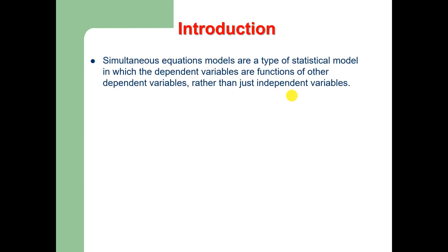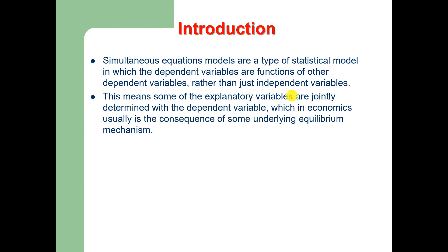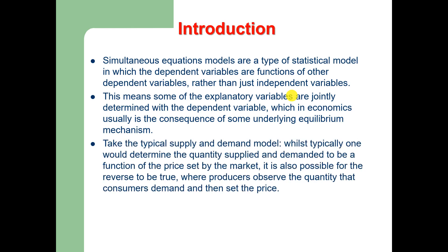Simultaneous equation models are a type of statistical model in which the dependent variables are not only a function of the exogenous variables but also of other dependent variables. This means that some of the explanatory variables are jointly determined with the dependent variable, which in economics usually is the consequence of some underlying equilibrium mechanism.